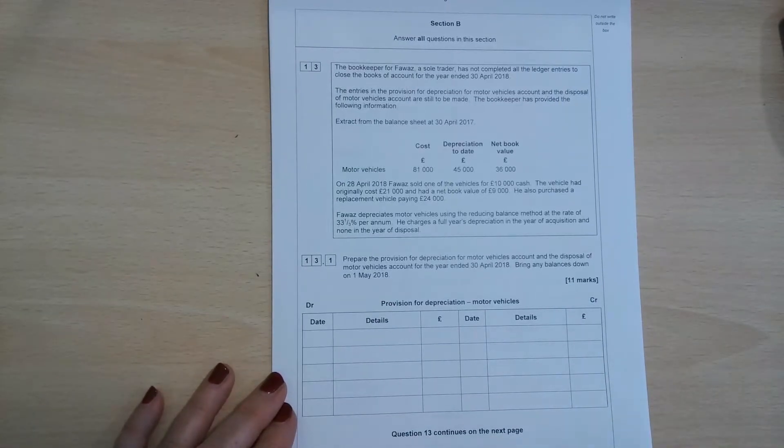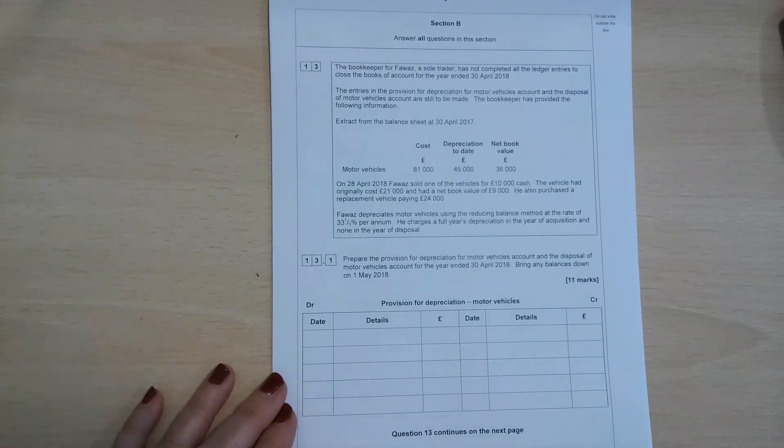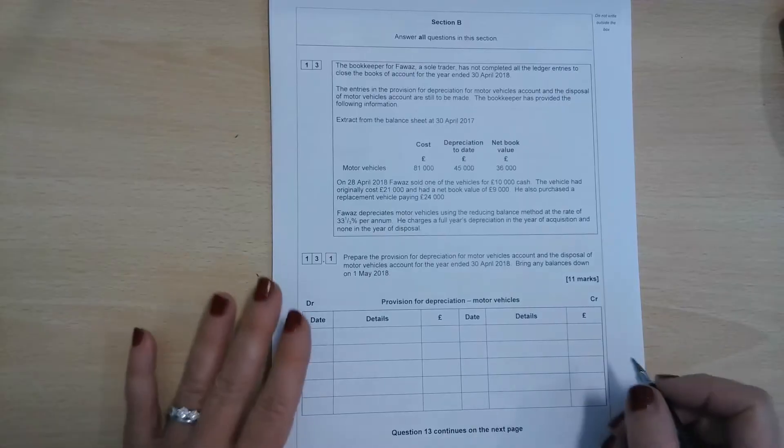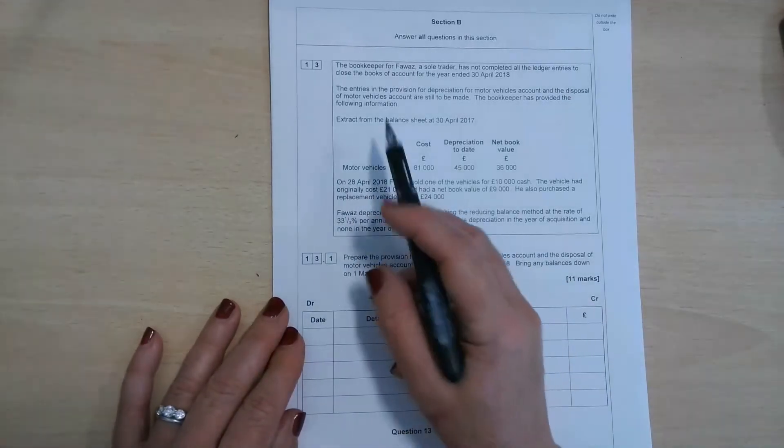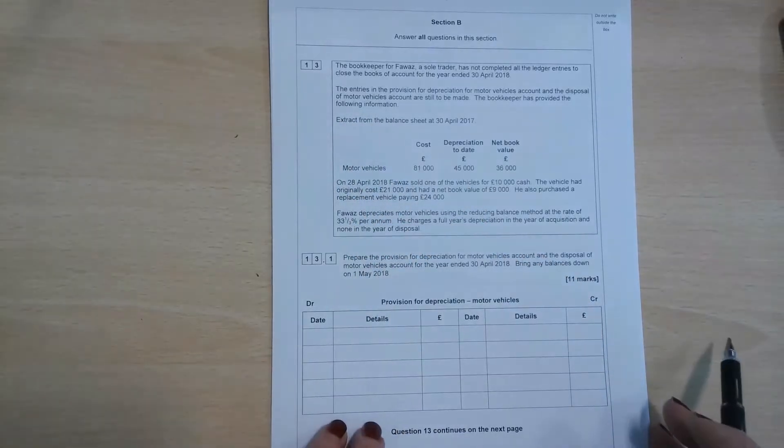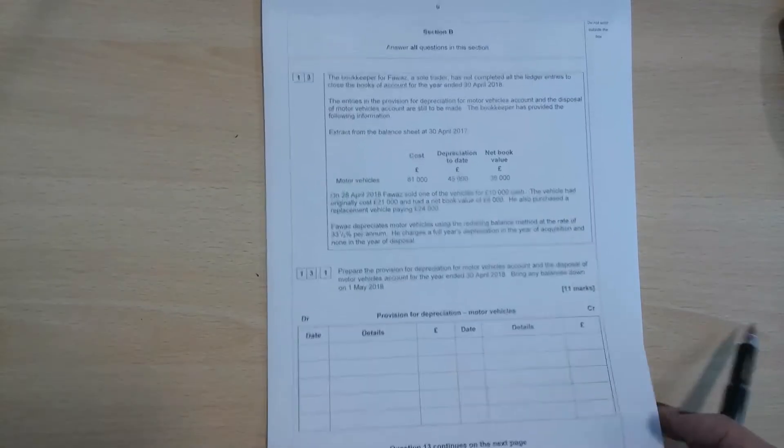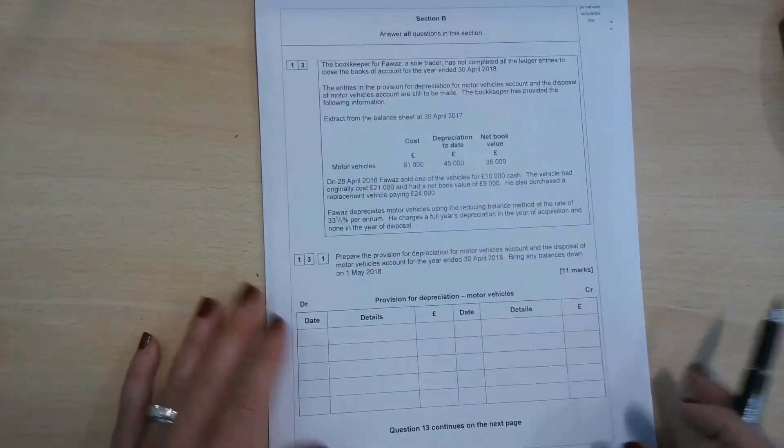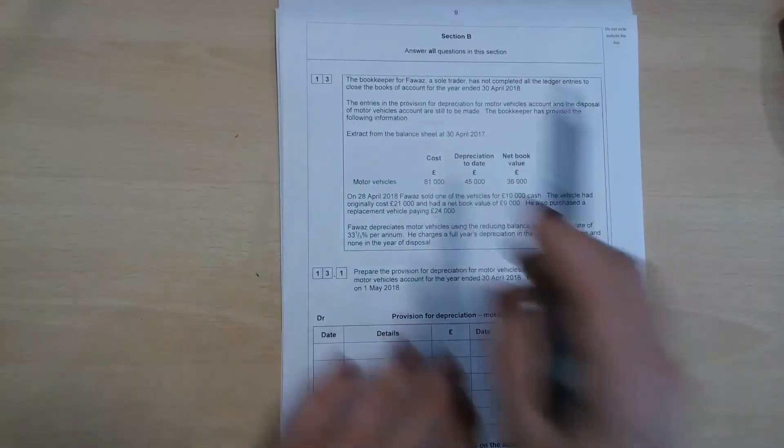So this question, FOWAS, came from the AS paper from June 2018. This was the 7126 AS paper, which has since been discontinued, but still provides us with some valuable question material. This is a question on provision for depreciation in T-accounts and also the disposal of motor vehicles. So without further ado,